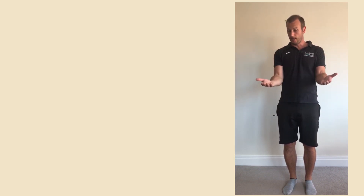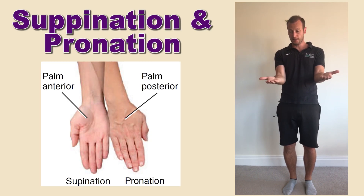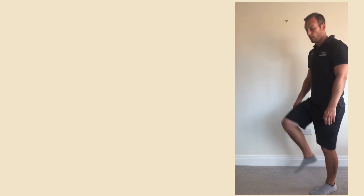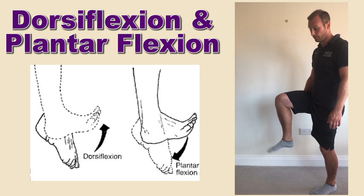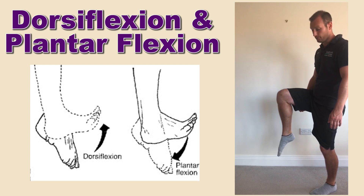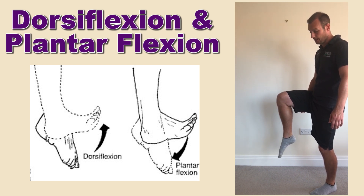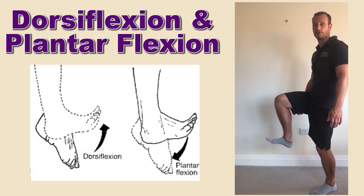For more specific movements: at the lower arm, the radio-ulnar joint allows supination — turning the palms up — and pronation — turning the palms down. At the ankle joint, there are two specific movements: plantar flexion, which is to put the toes down, and dorsiflexion, which is to lift the toes up.